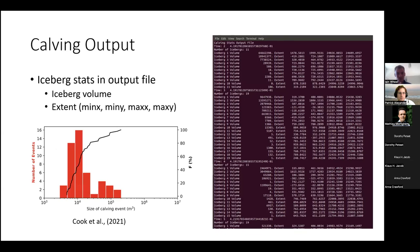Because we have the geometry of the icebergs being calved, we can output this into a file and give the iceberg volume and iceberg extent. It will be interesting to compare to iceberg distributions observed at Jakobshavn, similar to work from Samuel Cook's paper looking at icebergs breaking off the front of Store.